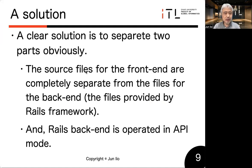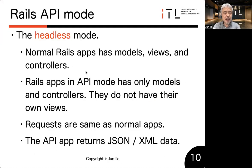Rails API mode is, in other words, the headless mode. A normal Rails application has models, views, and controllers — it runs in the MVC model. However, a Rails application in API mode has only models and controllers; it does not have its own views. Requests are the same as for normal applications, but the Rails application in API mode returns JSON data or XML data as the response.